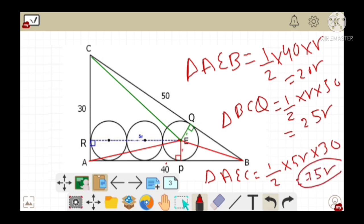Let's add all the areas of these three triangles, which gives the result 120R. This must be equal to the area of triangle ABC, which equals 1/2 times 30 times 40.